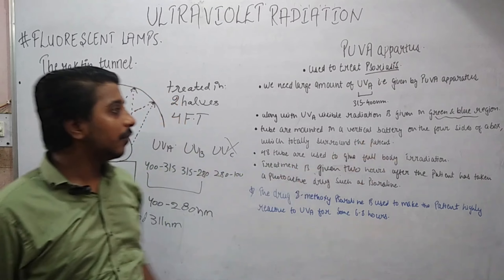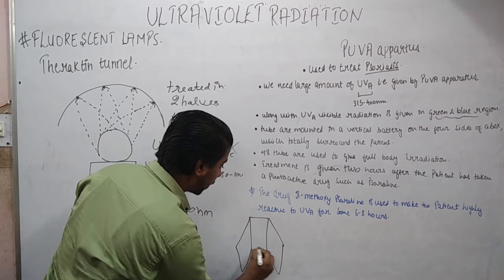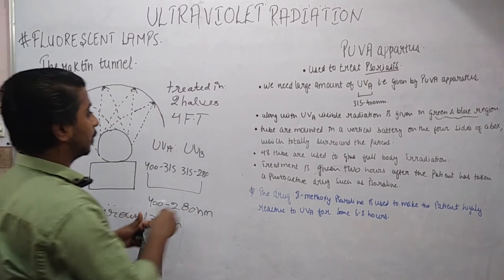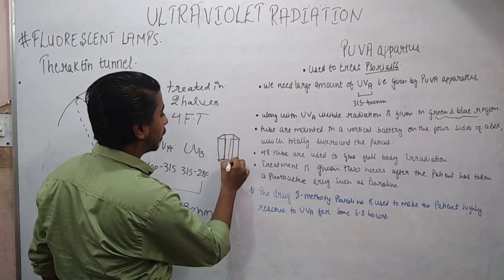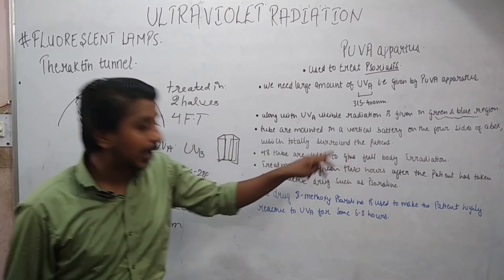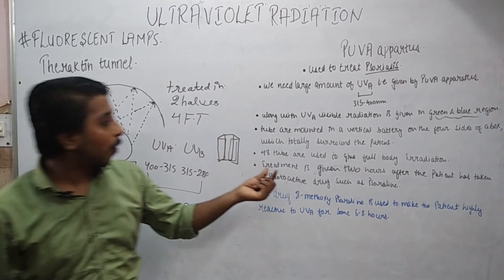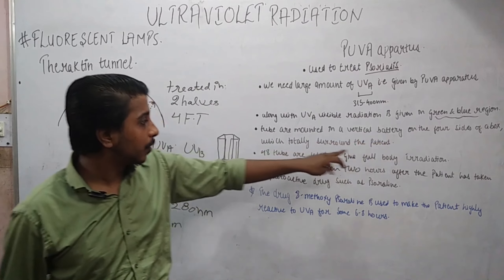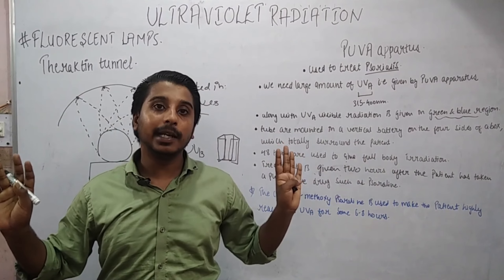The tubes are mounted in a vertical battery on the four sides of the box. There are four sides to the box — front, second, third, and the back side is the fourth — and 48 fluorescent tubes in total are used, mounted around the patient, to fully irradiate the whole body in a single attempt.